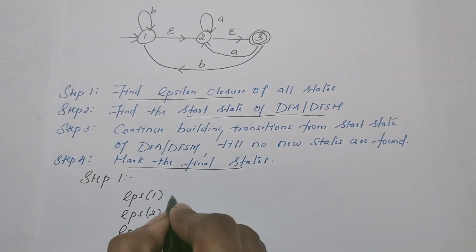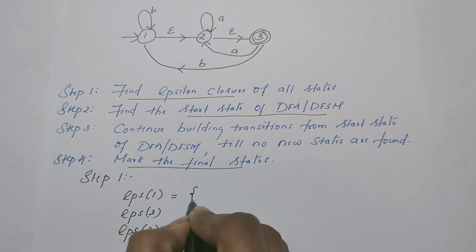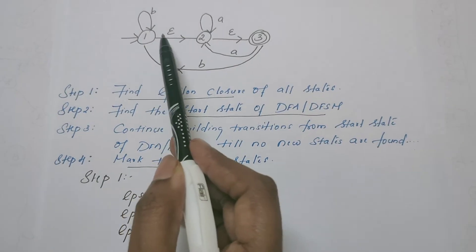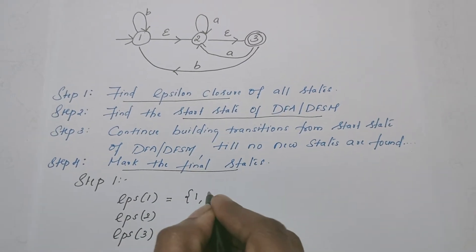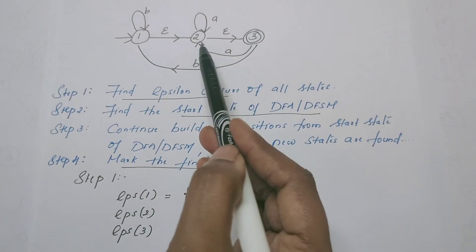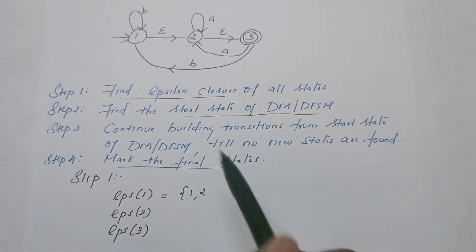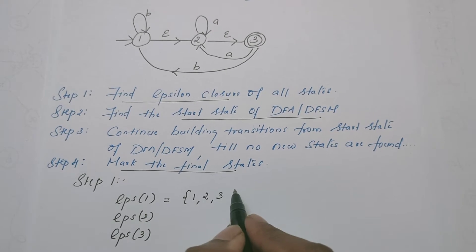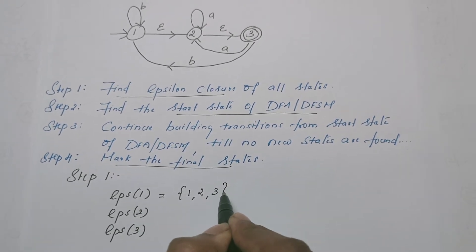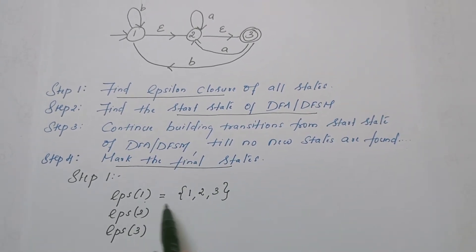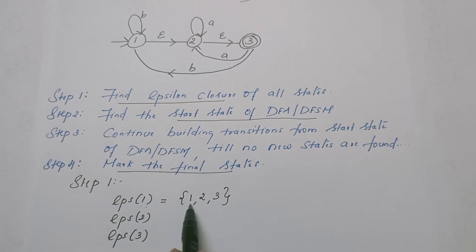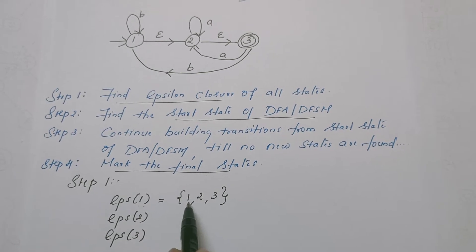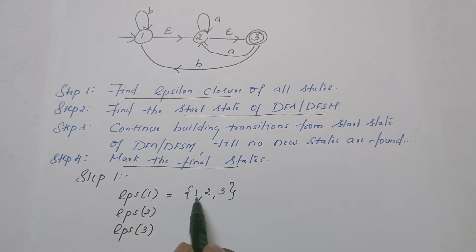Epsilon closure of state 1: by default, we include state 1 itself. From 1 on Epsilon, it reaches state 2. From state 2 on Epsilon, it reaches state 3. From 3 further, there are no Epsilon transitions. So Epsilon closure of 1 is {1, 2, 3} — we trace all states reachable from 1 only through Epsilon.